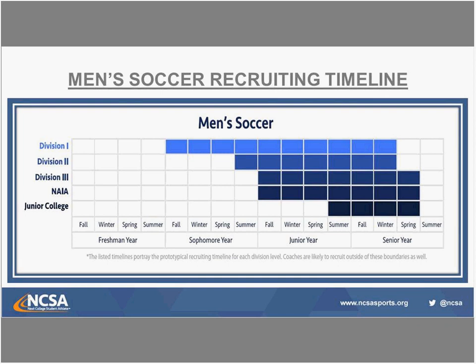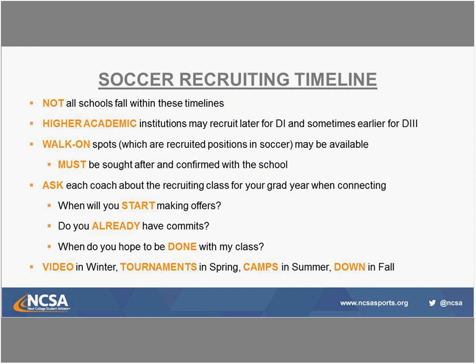Look at this timeline and figure out where you're at in this process. If you find yourself in the latter halves of the timeline, we don't need to be in panic mode yet, but we need to start doing something. If you're a 2022 or 2021 graduate not even to the beginning of the timeline yet, there are still things you can do to prepare and give yourself a leg up: researching schools, putting together highlight tape, sending emails with footage to get on a coach's radar, attending camps, and touring campuses.